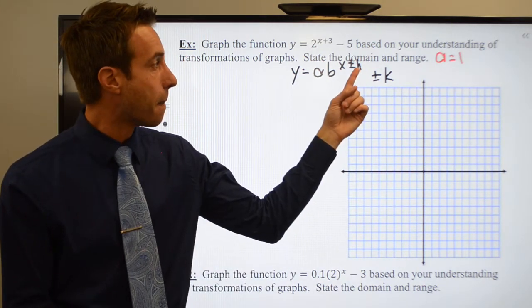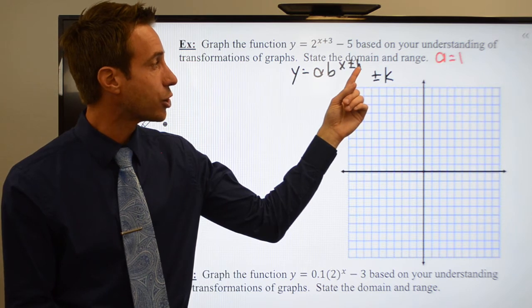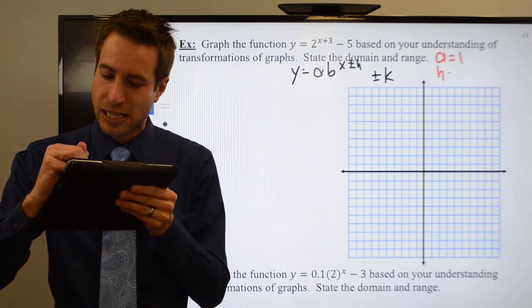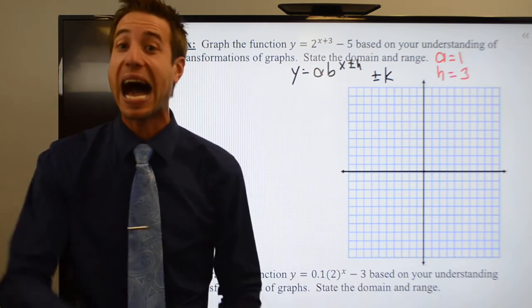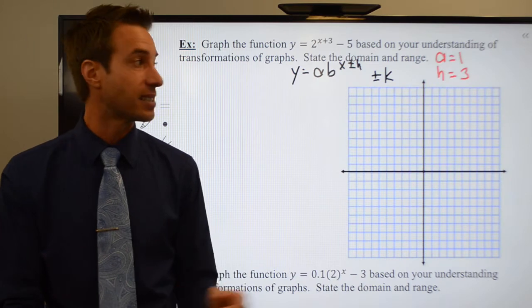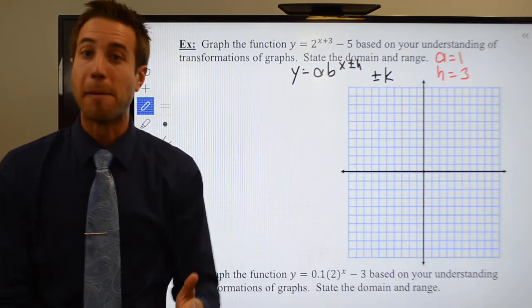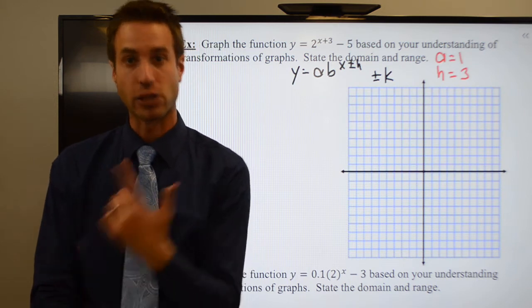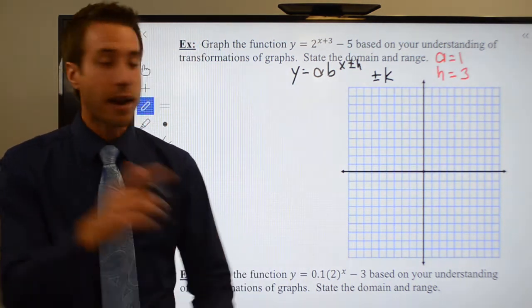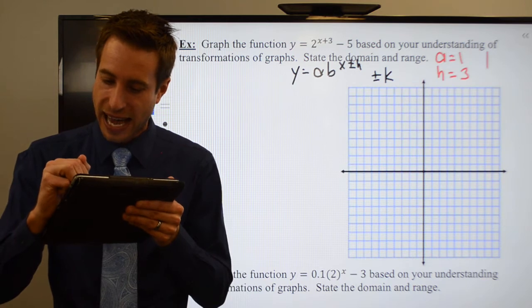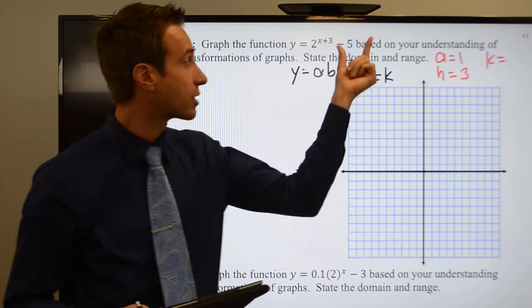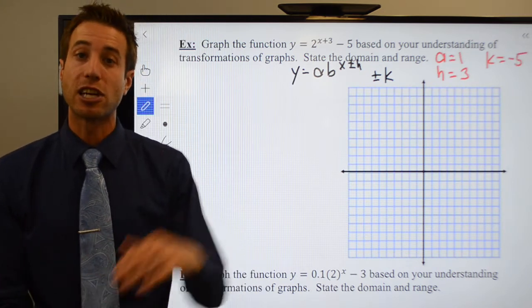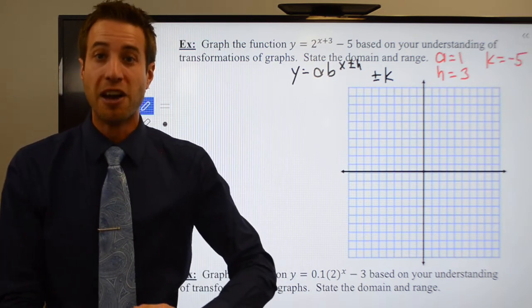I do have a number up in the exponent position with the x. It turns out to be a positive three. So h is equal to a positive three and I know h is going to do the opposite. Since I have a positive three, my graph is going to be shifted three units in the negative direction or to the left. And then of course my k, the number tacked on the end, is a minus five. My graph is going to be shifted down five units.